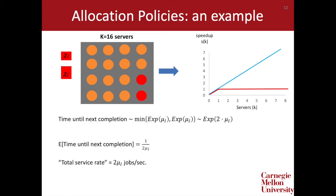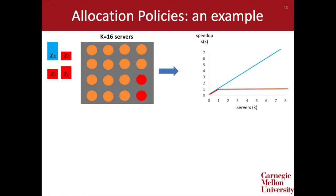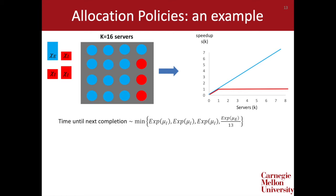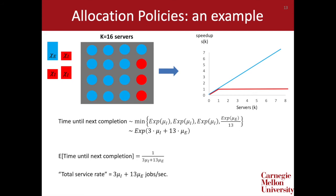Now consider our more heterogeneous workload with three inelastic jobs and one elastic job. Under the Inelastic First policy, we allocate one server to each of the three inelastic jobs and the remaining 13 servers to the elastic job. The time until the next completion is distributed as the minimum of three exponentials with rate mu_i and one exponential with rate mu_e — but because the elastic job runs on 13 servers, that's rate 13*mu_e. This is equivalent to an exponential with rate 3*mu_i + 13*mu_e, so the expected completion time is 1/(3*mu_i + 13*mu_e) and the total service rate is 3*mu_i + 13*mu_e jobs per second.